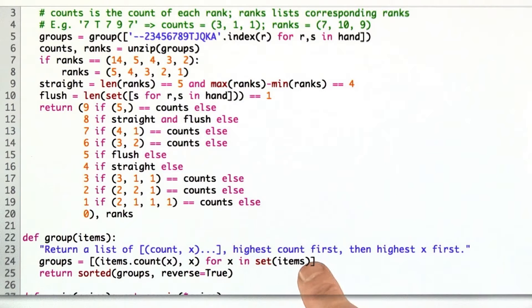It just goes through the set of items and returns pairs of the count and the set and then sorts them in reversed order so that the highest comes first.